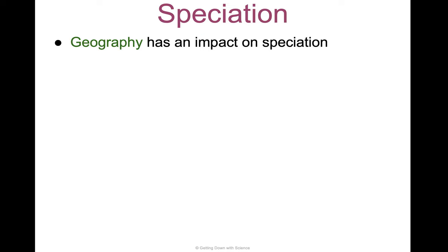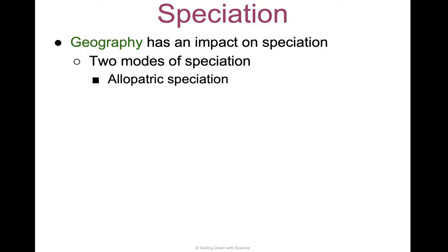Geography has a huge impact on speciation and the emergence of new species. There are two modes of it, and they're both very fun to say. The first one is allopatric speciation, and the other one is sympatric speciation. We're going to take them one at a time.